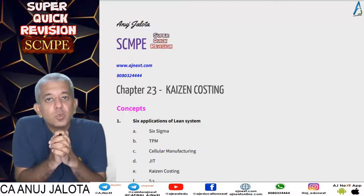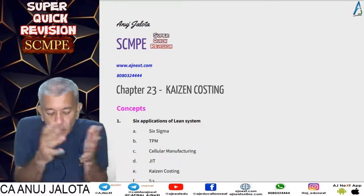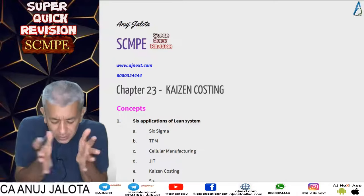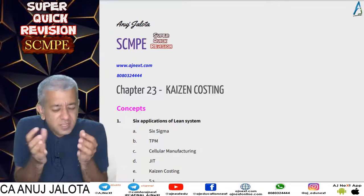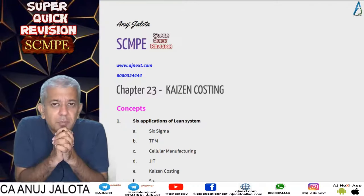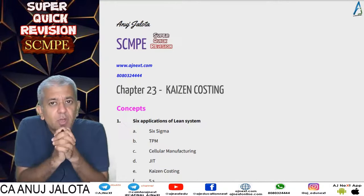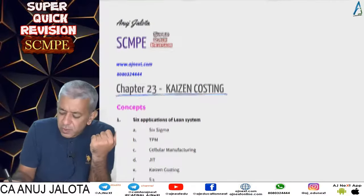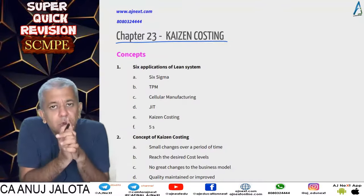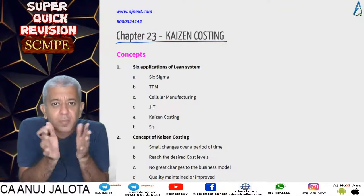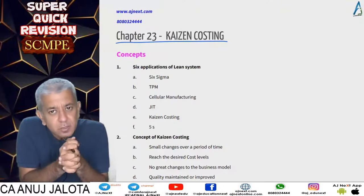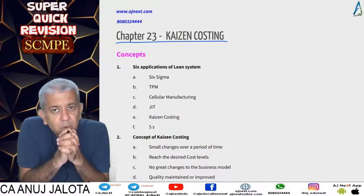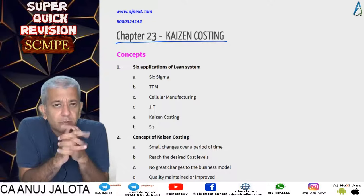Welcome back to our super quick revision series. We are on to Kaizen Costing, our next topic. I have tried to make your job a bit easier by giving you a summary of each and every question we have done in class. Kaizen Costing is a part of something called lean systems, which we discussed in chapters 20, 21, and 22.